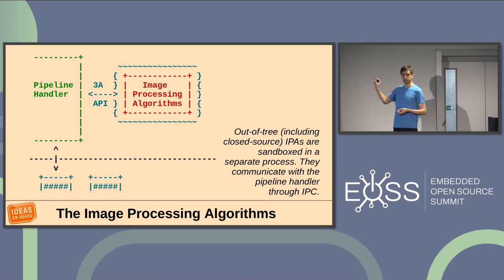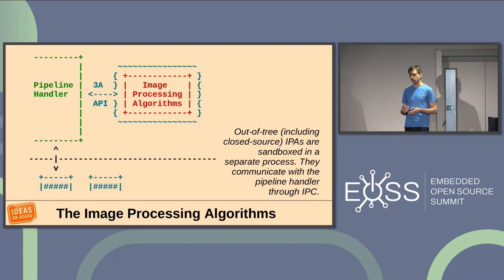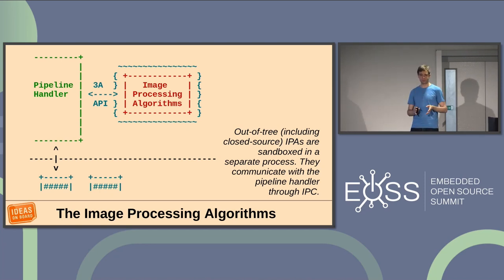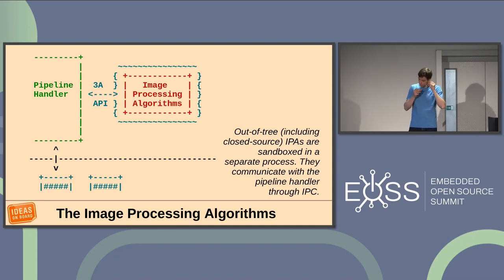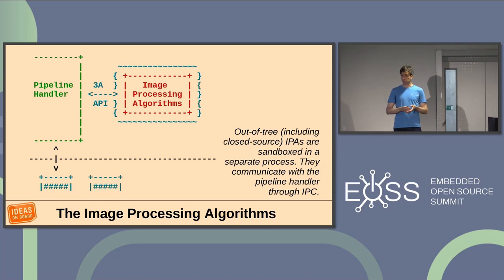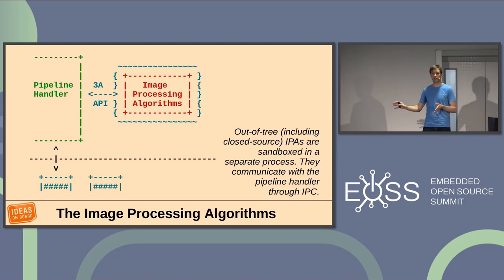The pipeline handler is part of the libcamera core and has to be fully open source, while IPA modules don't — they can be out-of-tree and closed source, because vendors often don't want to release all the knowledge put into creating those algorithms. We have fully open source implementations in libcamera, but we also offer vendors the ability to provide closed source implementations. It's the same situation as with GPUs: you must provide an open source implementation in Mesa, but you're free to also provide a closed source implementation in parallel.